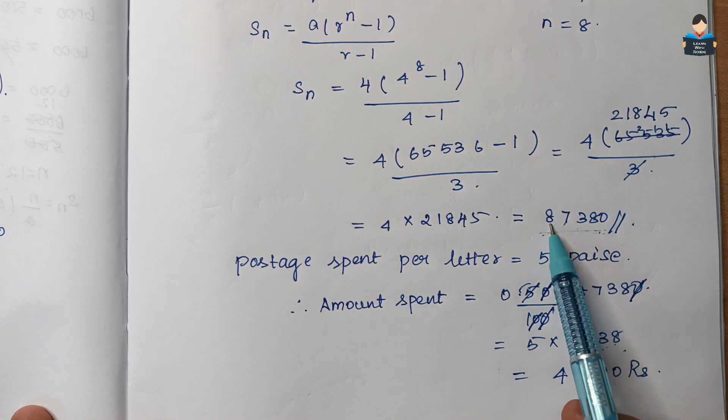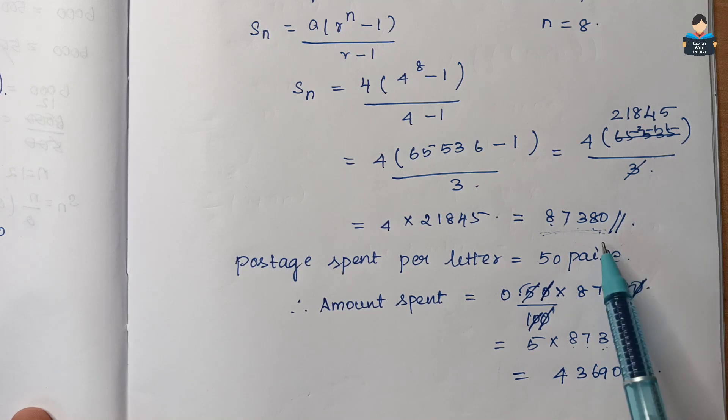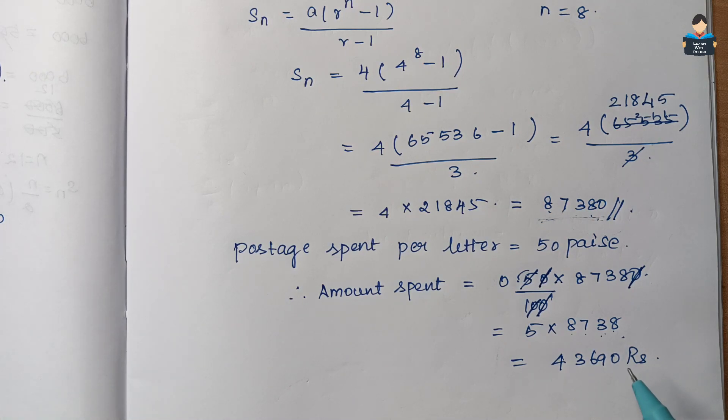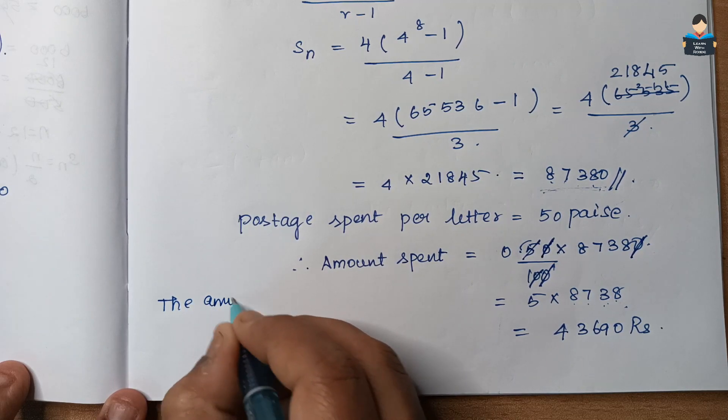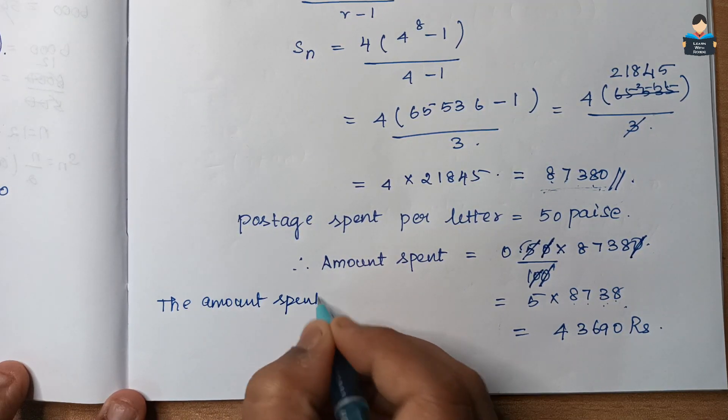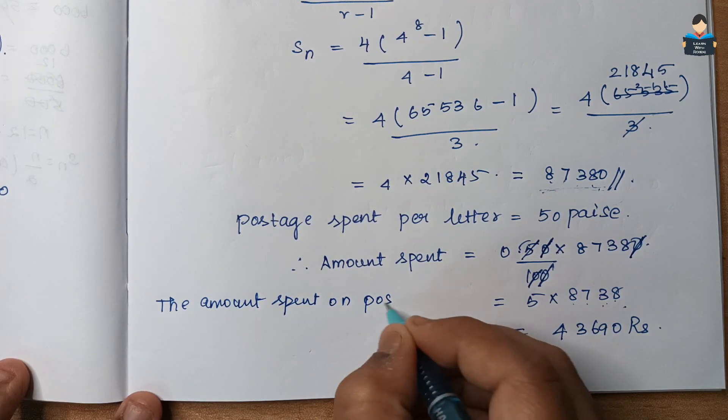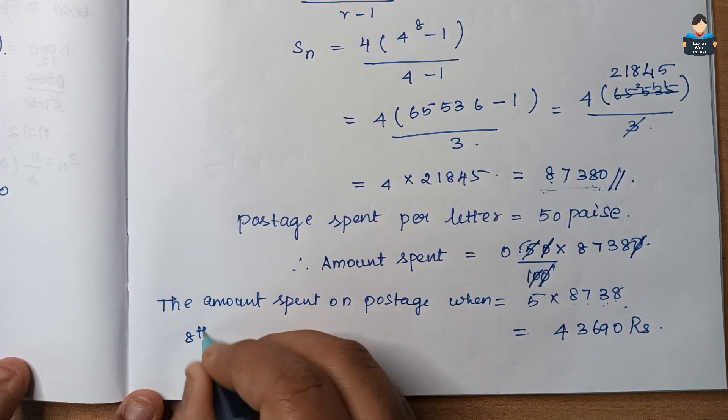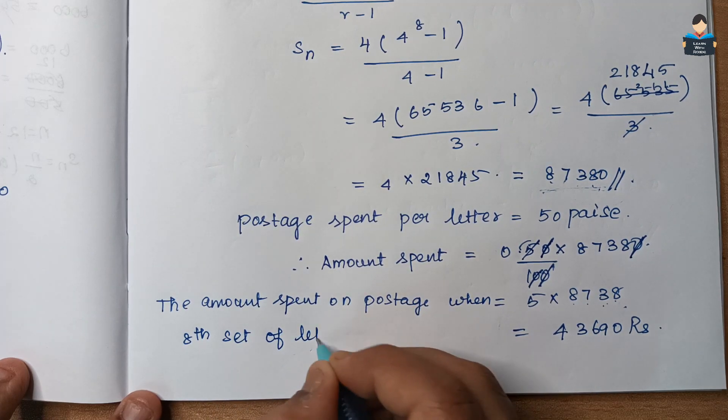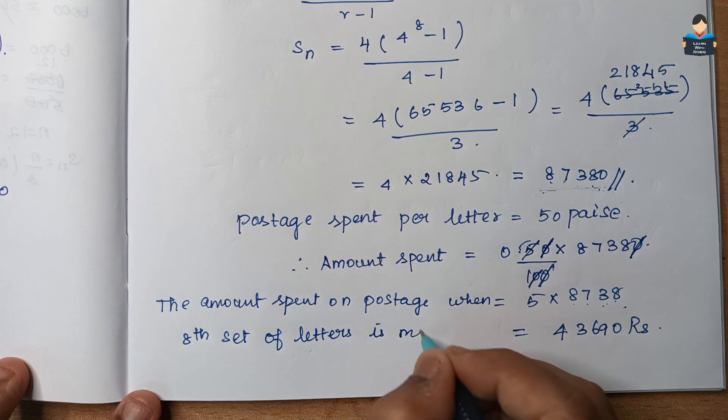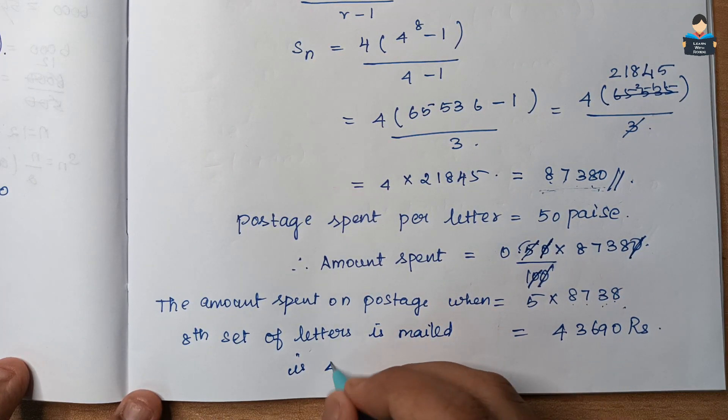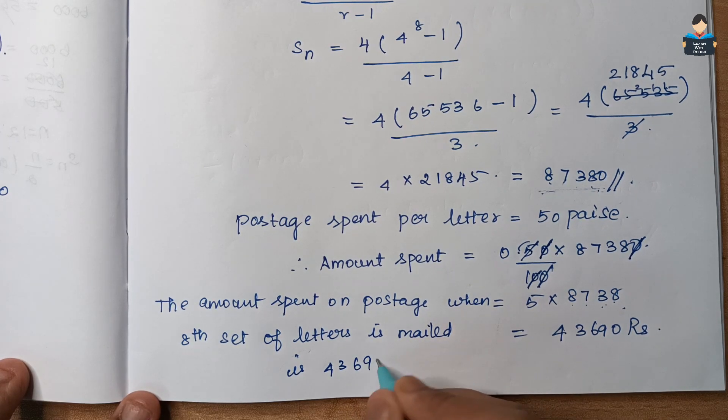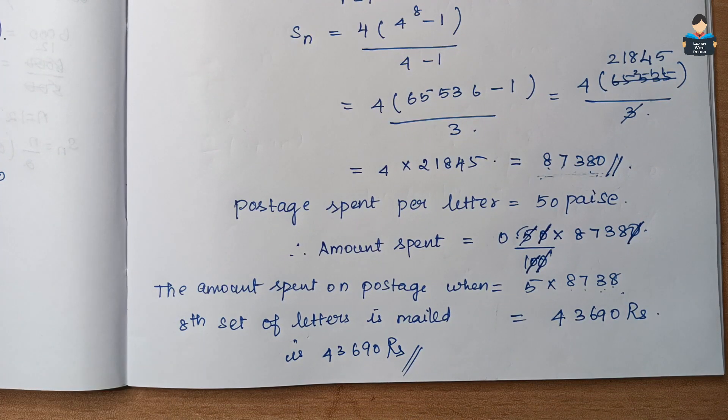So the amount spent on postage when 8th set of letters is mailed is 43,690 rupees.